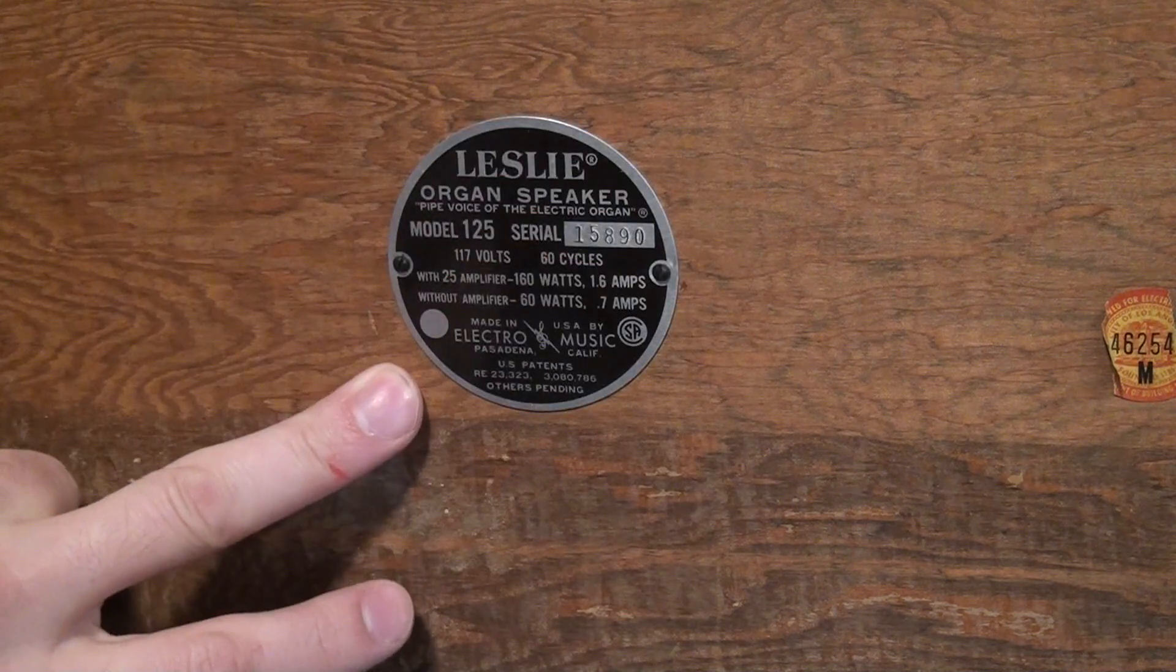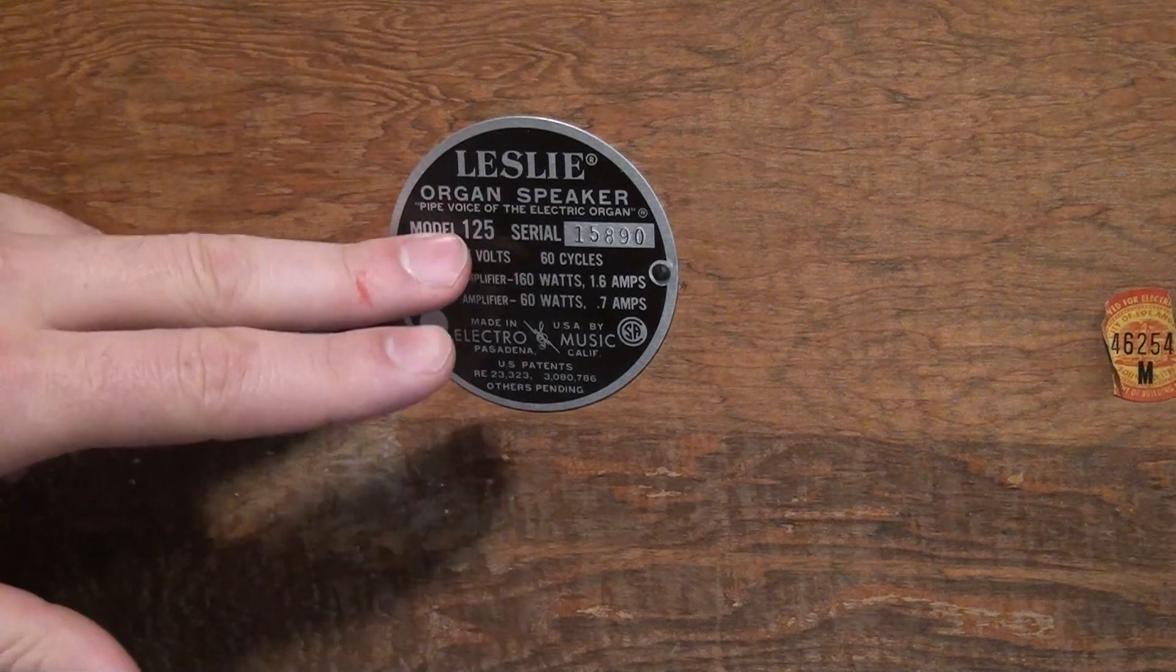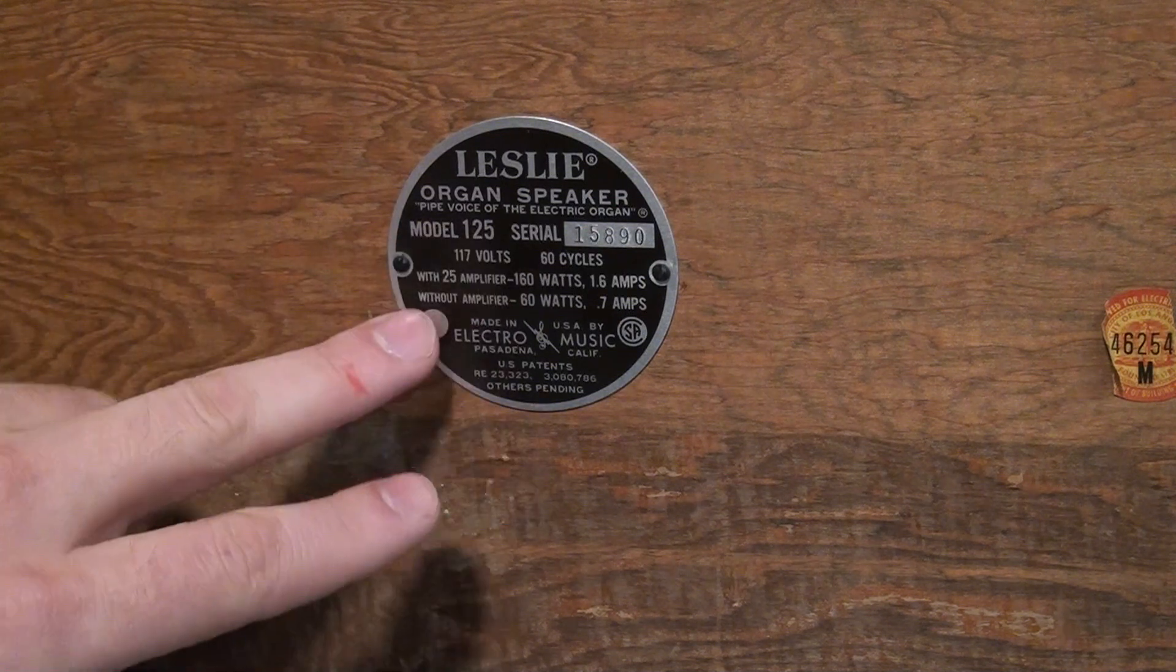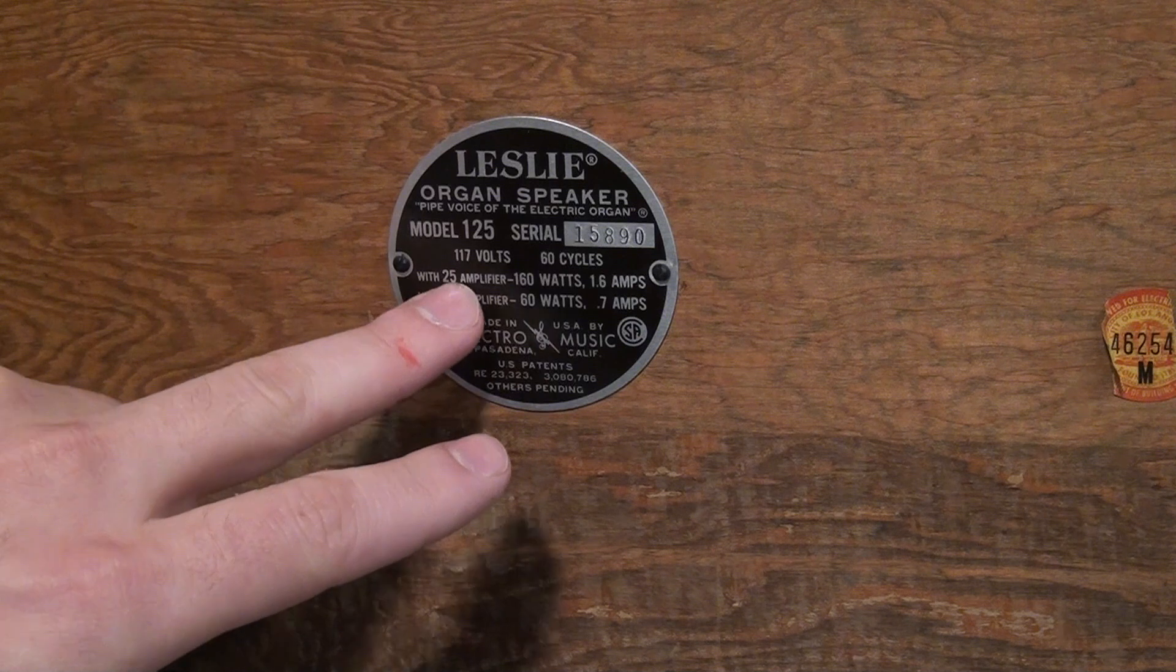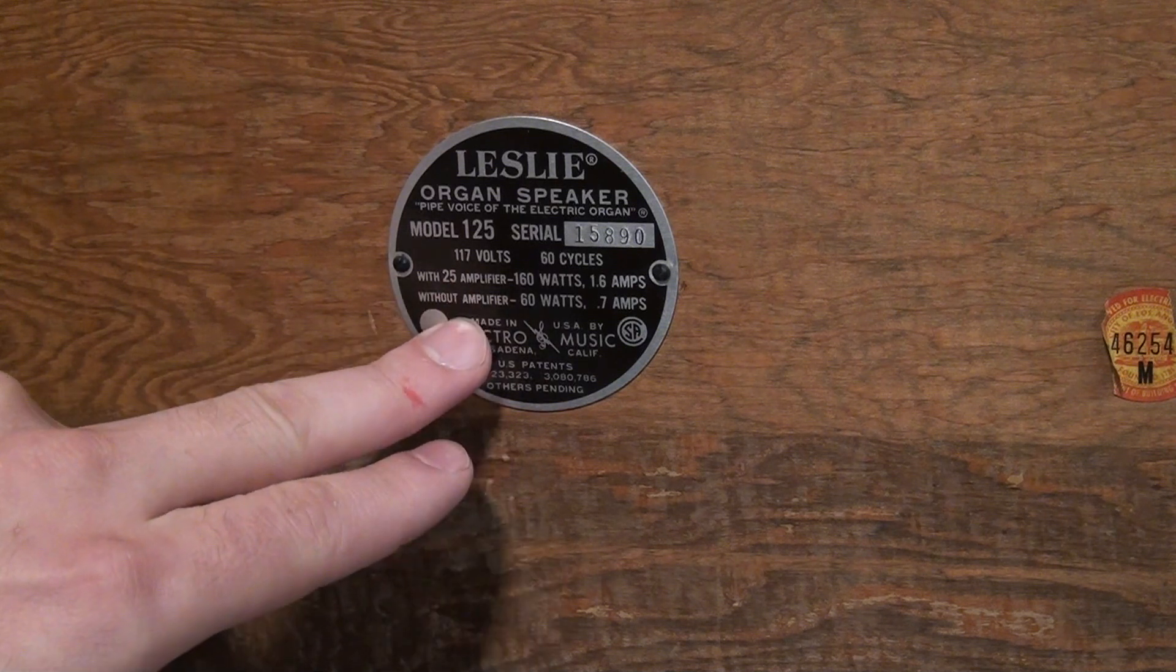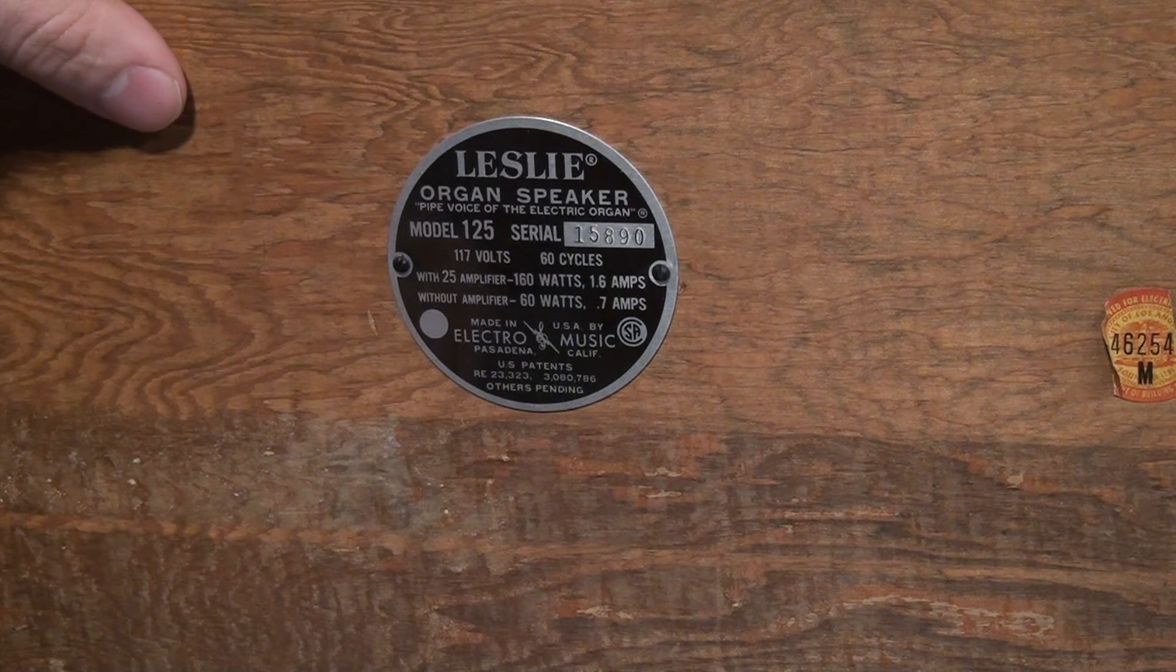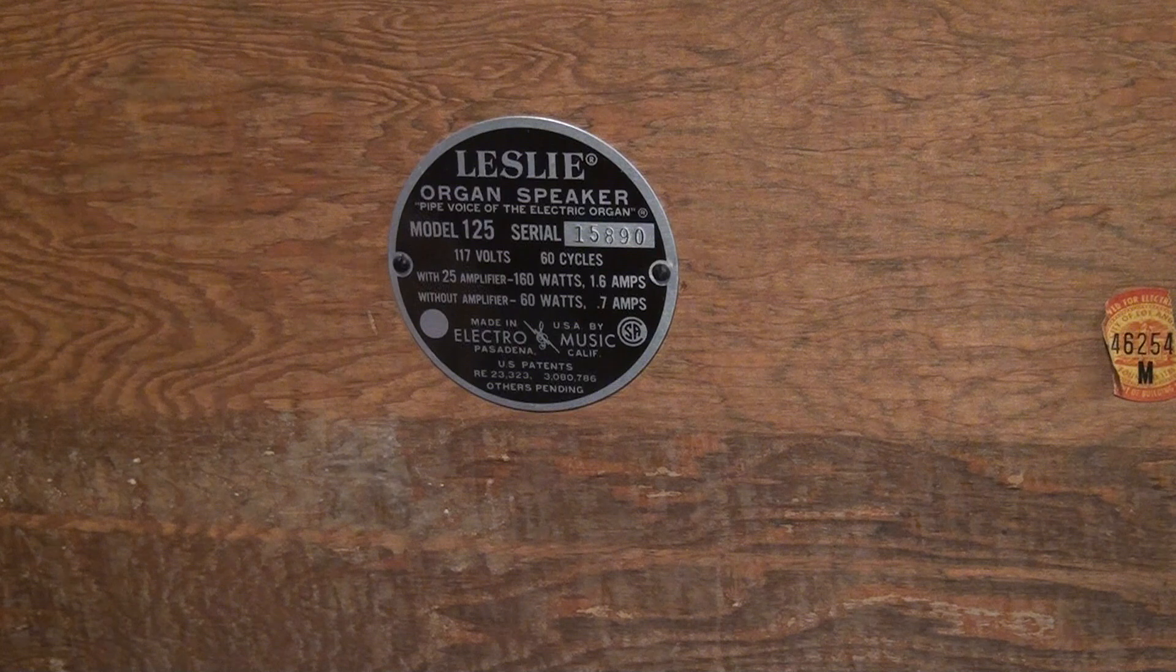Before I get the plates off, I want to talk about these badges that are on the back. If you're trying to find information about your Leslie, this is a good starting point. It tells me the model number and also gives me some more information. Serial number talks about an amplifier and without an amplifier.